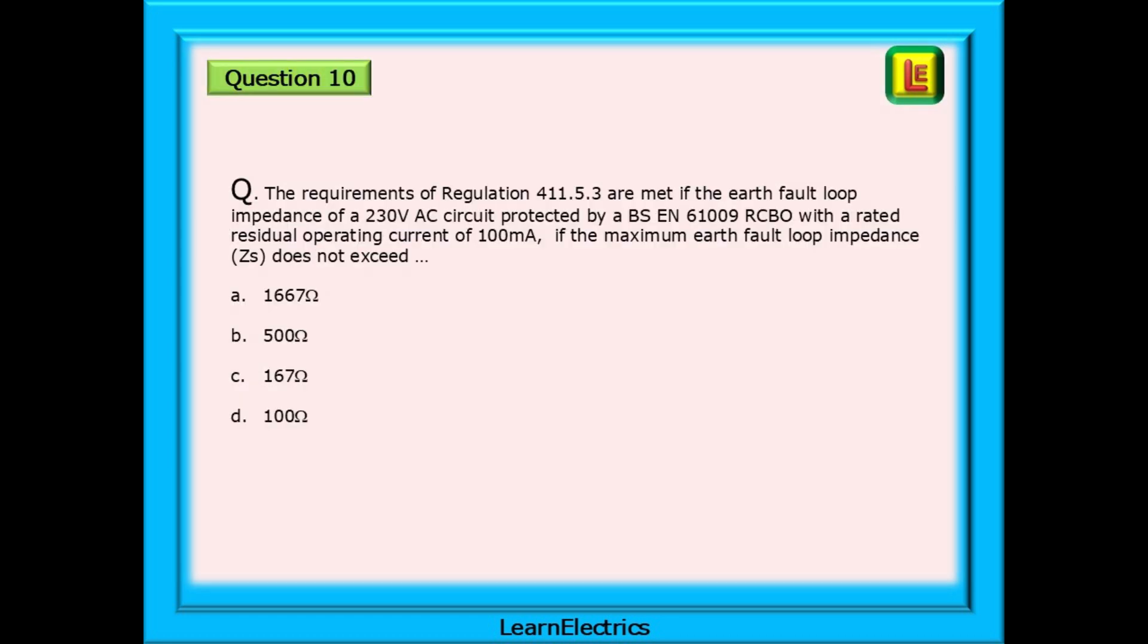Now for question 10. The requirements of Regulation 411.5.3 are met if the earth fault loop impedance of a 230 volt AC circuit protected by a BS EN 61009 RCBO with a rated residual operating current of 100 milliamps if the maximum earth fault loop impedance ZS does not exceed what?